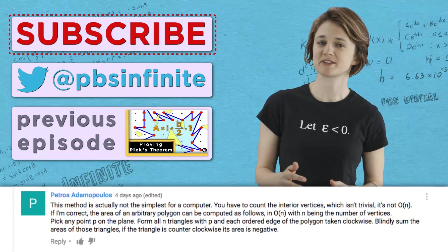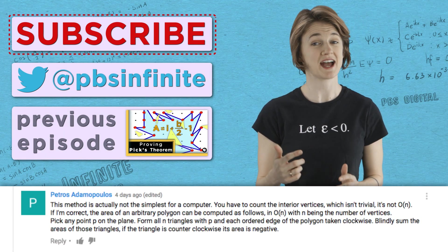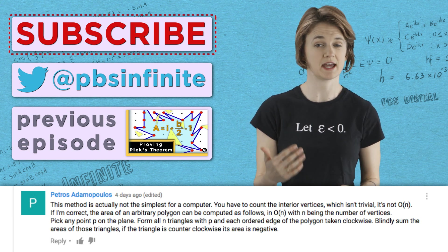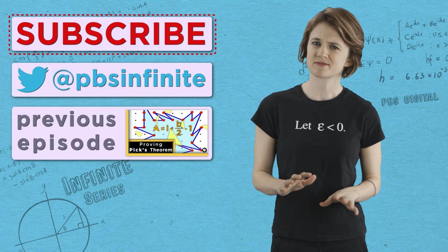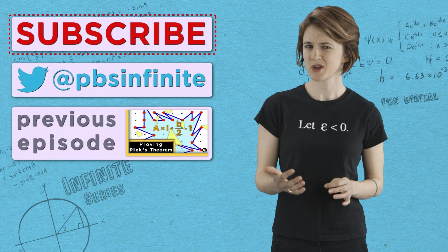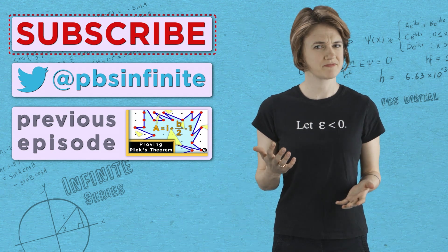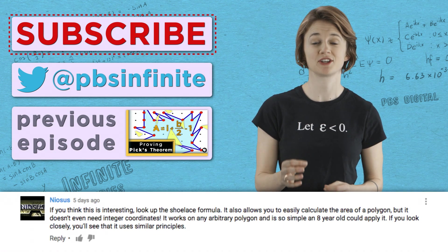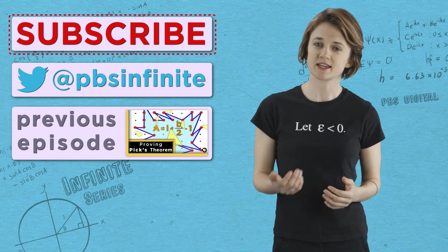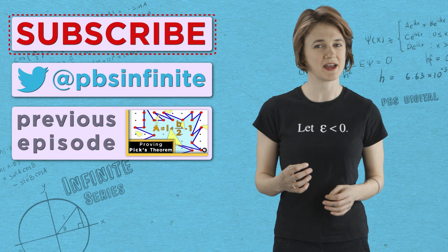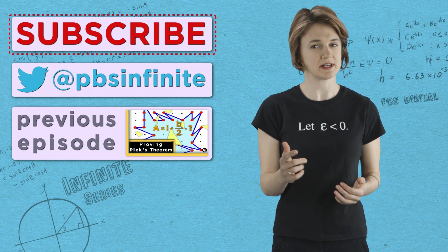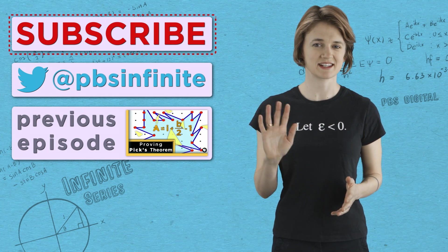Petros Adamopoulos responded that this method is actually not the simplest for a computer, and then suggested a method for a computer to find the area of a polygon. This made me curious—does anyone know other methods for a computer to find the area of a polygon? What about an arbitrary shape? Finally, Niosys drew our attention to the Shoelace Formula, which I'd never heard of before. It also finds the area of a polygon in a neat way that multiplies the vertex coordinates in a weird crisscross pattern—hence the name Shoelace Formula. Go check it out. See you next time.